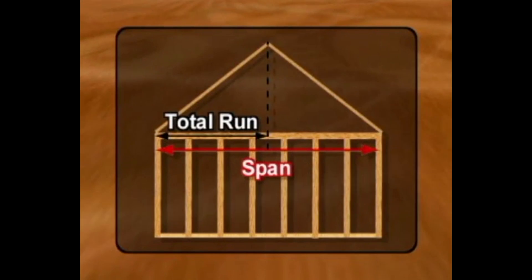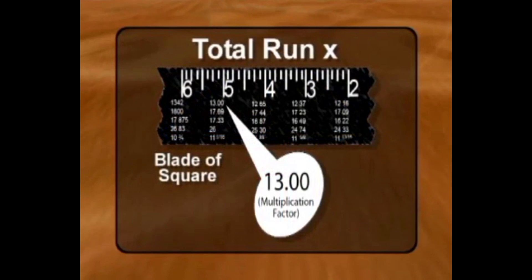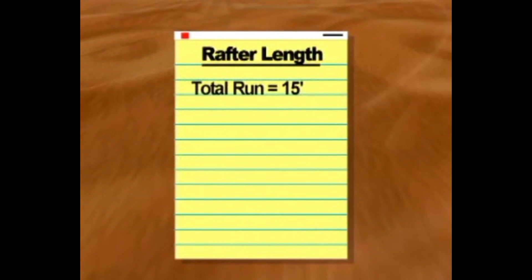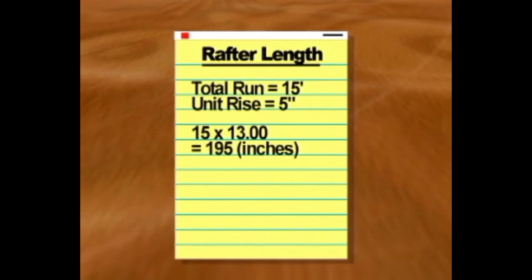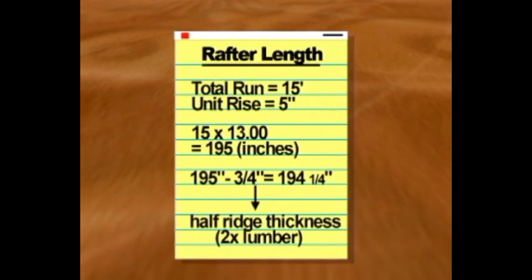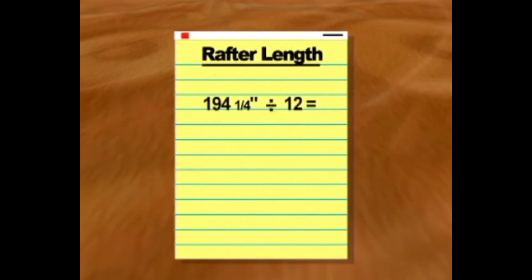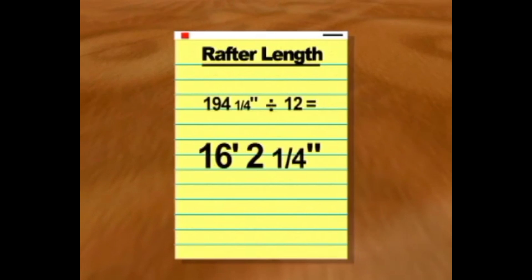Keep in mind that the total run is half the length of the span. To begin the calculation, multiply the total run by the multiplication factor, which is the number directly below the inch mark for unit rise. For example, if the total run is 15 feet and the unit rise is 5 inches, multiply 15 by the number directly below the unit rise, which is 13 on the framing square. This comes to 195 inches. Now, subtract half the thickness of the ridge board, which for 2-by lumber is 3/4 of an inch. Finally, we'll convert this figure to feet by dividing by 12 to arrive at a rafter length of 16 feet 2 and a quarter inches.